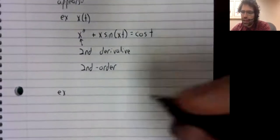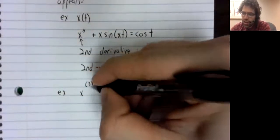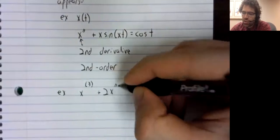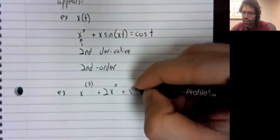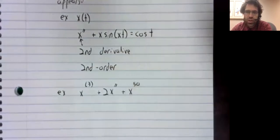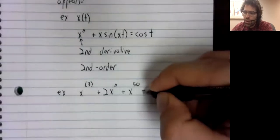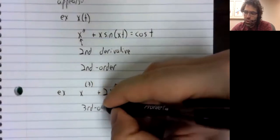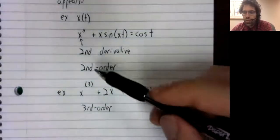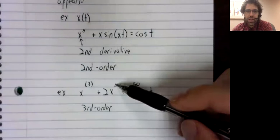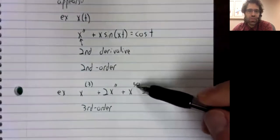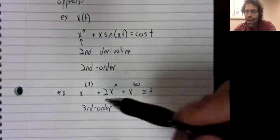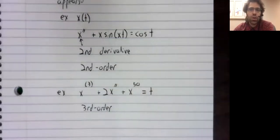So this differential equation is second order. If we had maybe a third derivative plus twice the second derivative plus x raised to the 50th power equals t, this is third order. You've got a third derivative and a second derivative. Don't get confused - this isn't a derivative, it's just something being raised to a power. So of the derivatives you have, three is the highest order that appears.